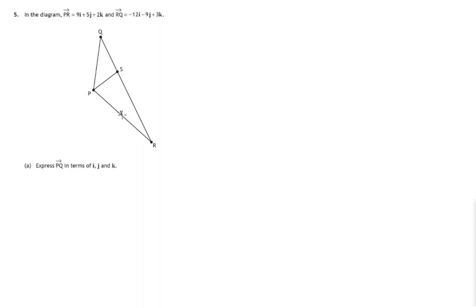So let's have a closer look at what they're telling us. From P to R, 9i plus 5j plus 2k. Let's write that in column form: 9, 5, 2.